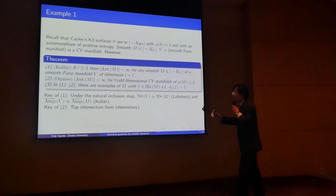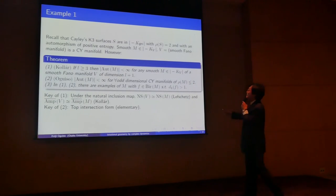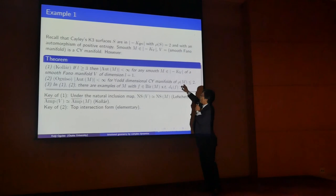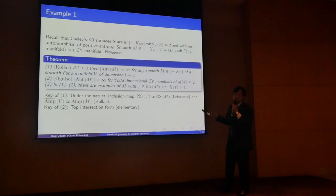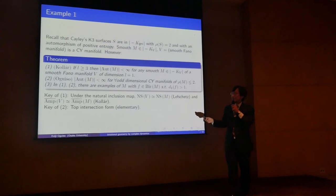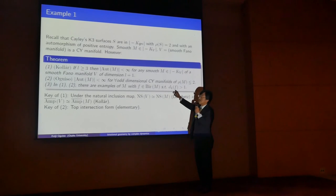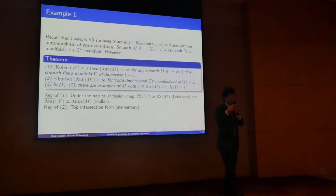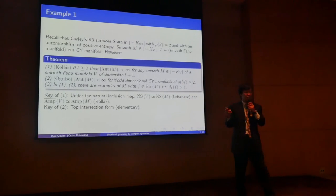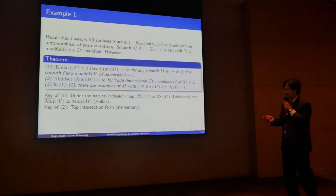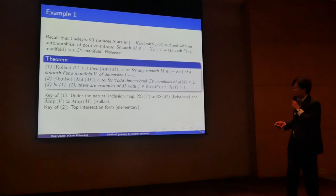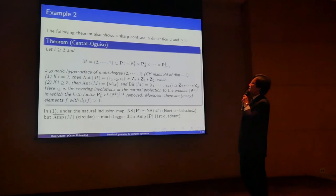In both cases there are birational automorphisms of positive first dynamical degree — there are some examples. A more concrete example is this: consider the product of P1 to the power L+1, and a generic hypersurface of multi-degree (2,2,2,...,2). This is again a Calabi-Yau manifold of dimension L. If L equals 2, this is a 2-dimensional Calabi-Yau, which is a K3 surface. In that case the automorphism group is quite rich with positive entropy elements.